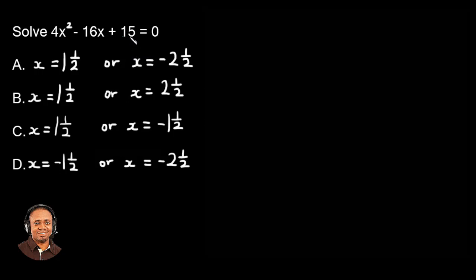In this instance, did you notice the coefficient of x squared? So this may not be like just a regular quadratic equation where you just find the factor of the last term which is 15 and then start solving. The first thing you need to do is to multiply the coefficient of x squared, which is 4, by the last term which is 15, and that will give us 60.